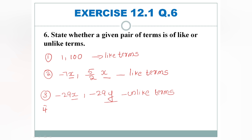The fourth pair is 14xy and 42yx. These have the same variables x and y, so they are like terms.